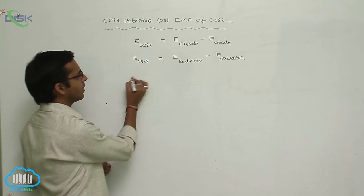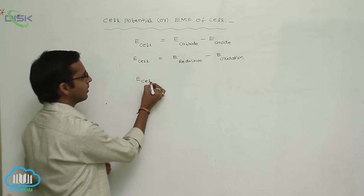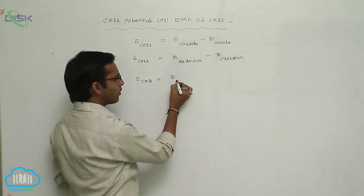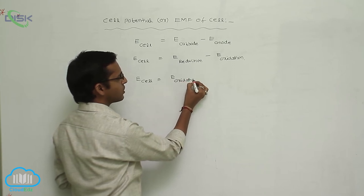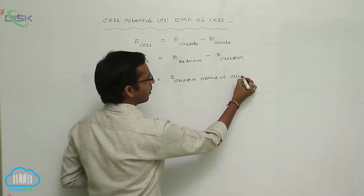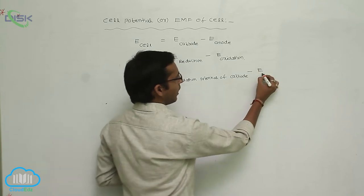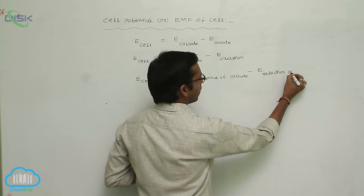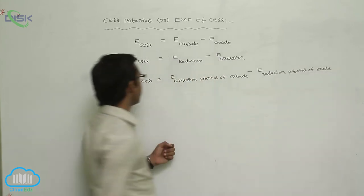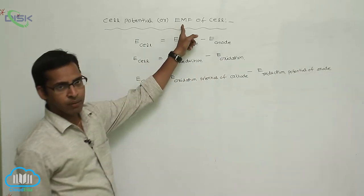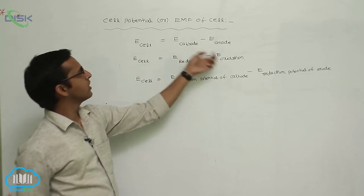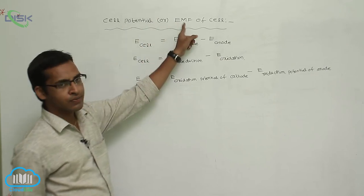Another conventional equation: E cell equals E anode, where E anode means the oxidation potential, minus the reduction potential of the anode. This is another mathematical equation for calculation of EMF of cell — the difference between two electrode potentials is called cell potential or EMF of cell.